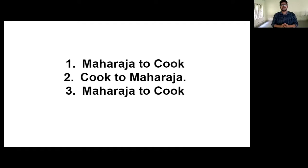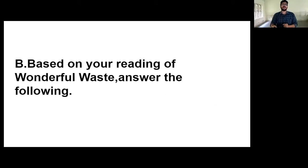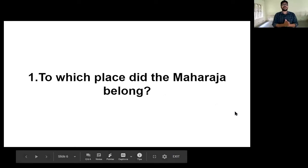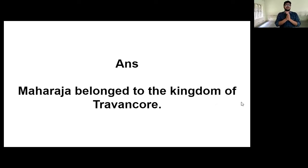Moving to the next activity B — based on your reading of Wonderful Ways, answer the following questions. First question: to which place did the Maharaja belong? The answer is the Maharaja belonged to the kingdom of Travancore. The kingdom of Travancore is very famous in our Kerala. I hope you have written it in your workbook.